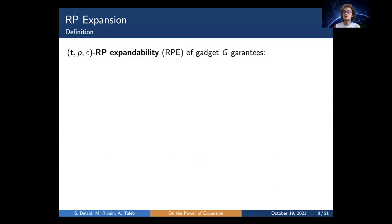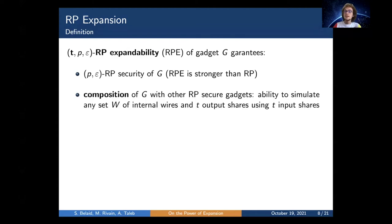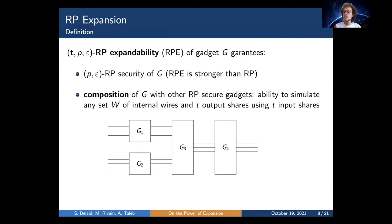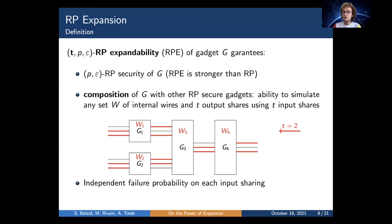For this to work, gadgets must be random probing expandable (RPE). The RPE notion ensures first the gadget's random probing security, and also guarantees composition with other RP-secure gadgets. The idea is to simulate any set of wires on the gadget along with T output shares using at most T input shares. In a circuit composed of a bunch of gadgets, fixing T equal to two for example, we can go from the bottom level to the top by simulating T outputs along with internal probes using T inputs up to the topmost inputs. Additionally, RPE imposes an independent failure event probability on each input sharing, which is an essential condition for expansion to an arbitrary level K.